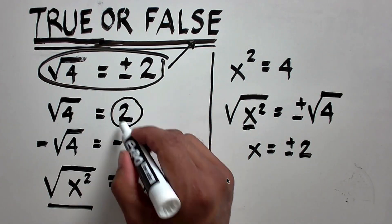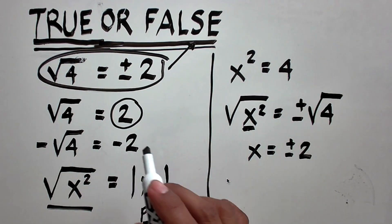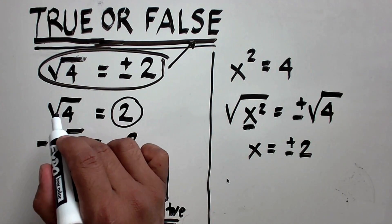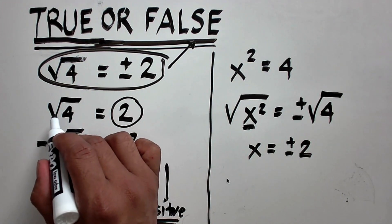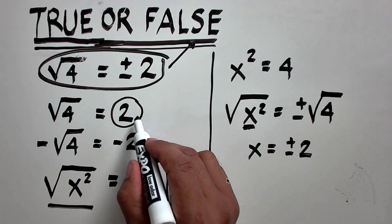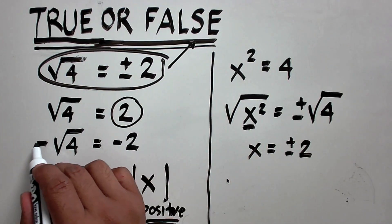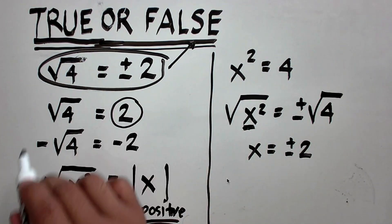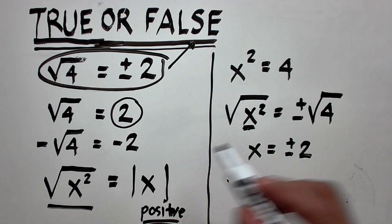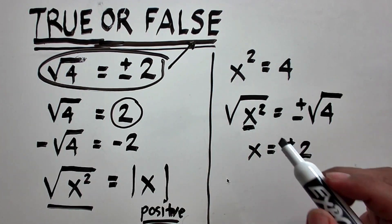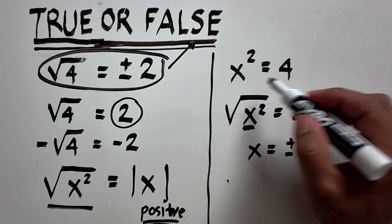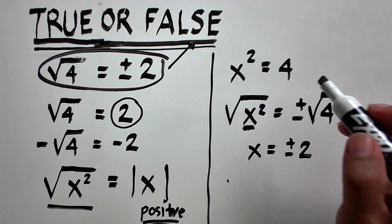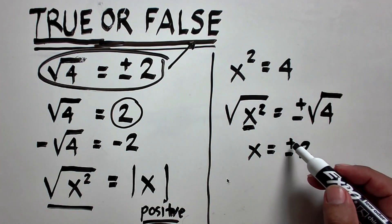The right side is positive. So this is now to clarify the misconception: when there is no sign before the square root symbol, that is implied to be the principal square root, and the answer is positive. When there is a minus sign and you take the square root, the answer is negative. When do we use the plus or minus sign? When we are solving an equation like a quadratic equation. We know that there are two roots, and those are plus or minus 2.